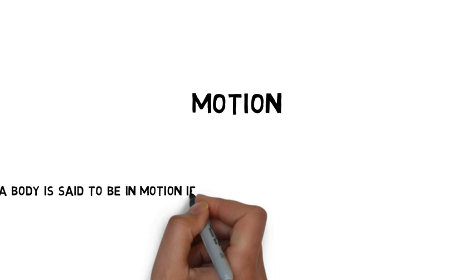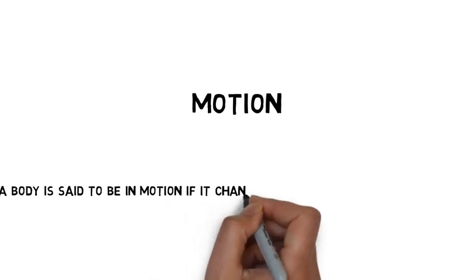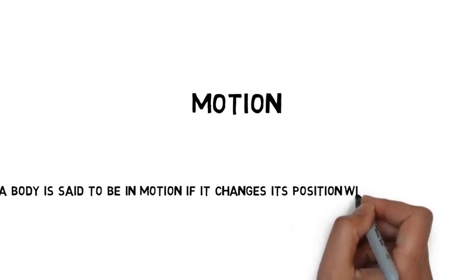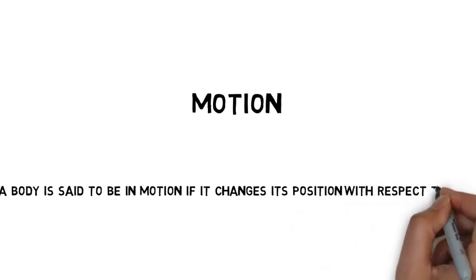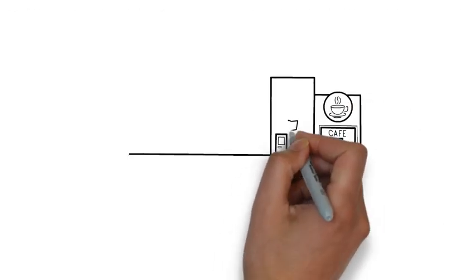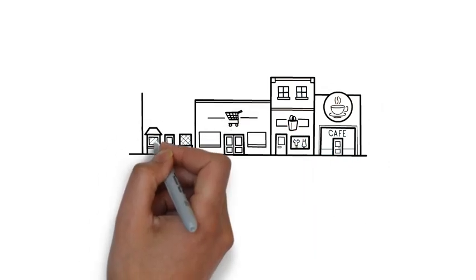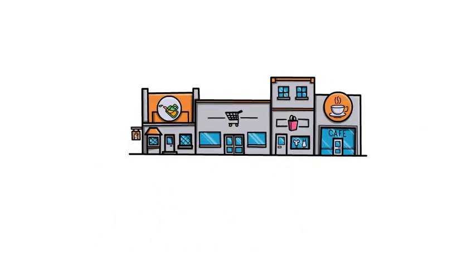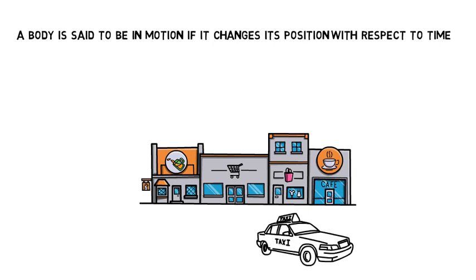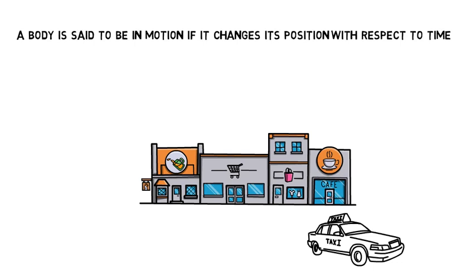In this chapter we are going to deal with motion. A body is said to be in motion if it changes its position with respect to time. You can see a cafeteria there, and now you can see a car — a taxi — moving. So that taxi is moving with respect to time, and we can say the car is in motion.